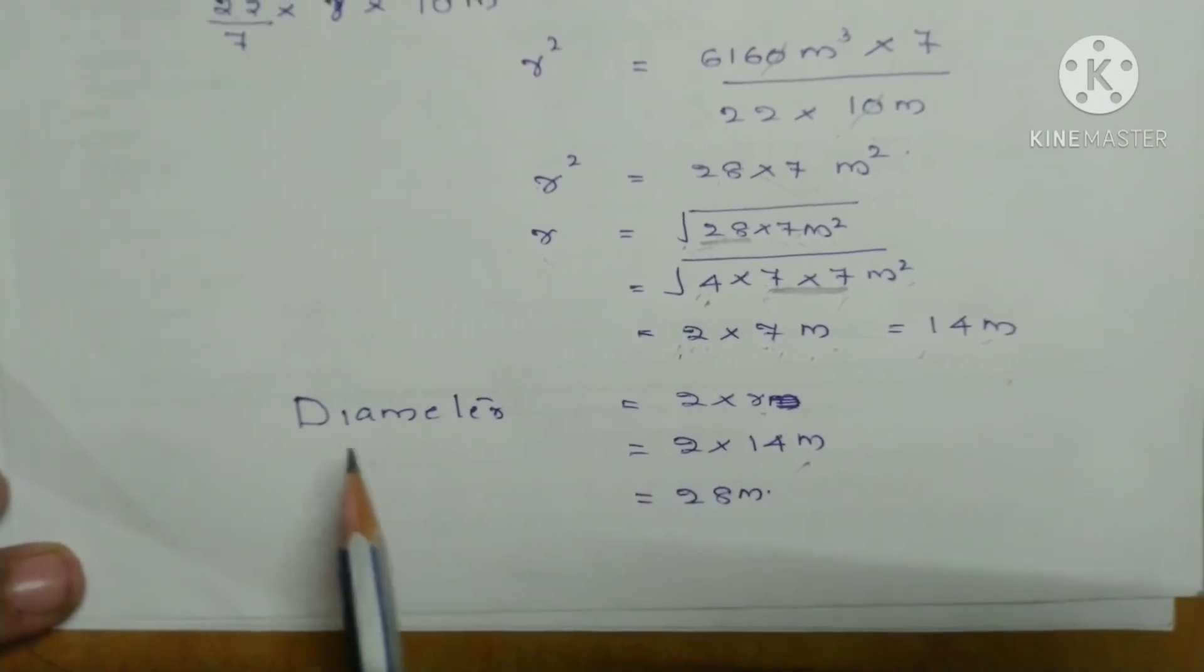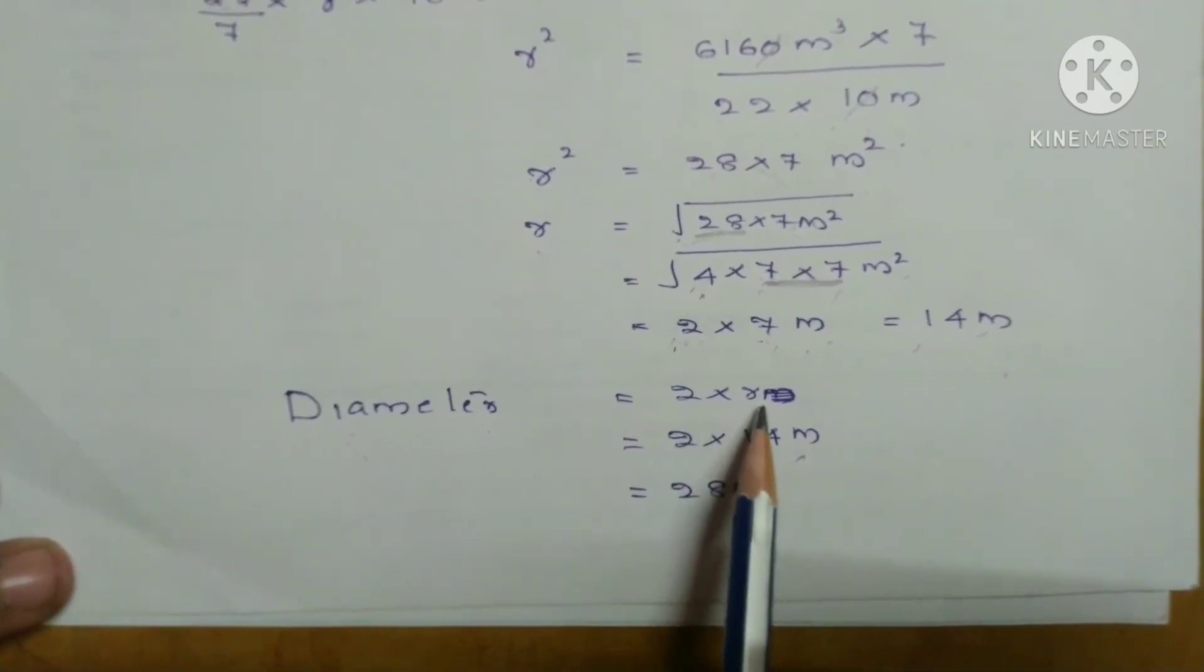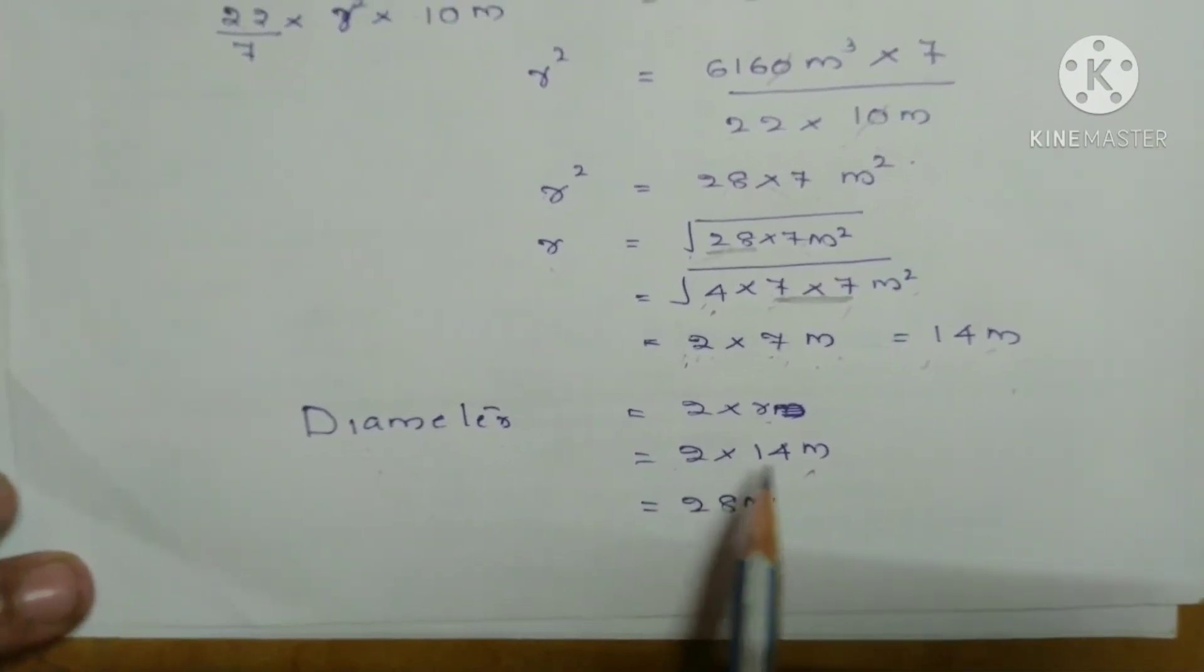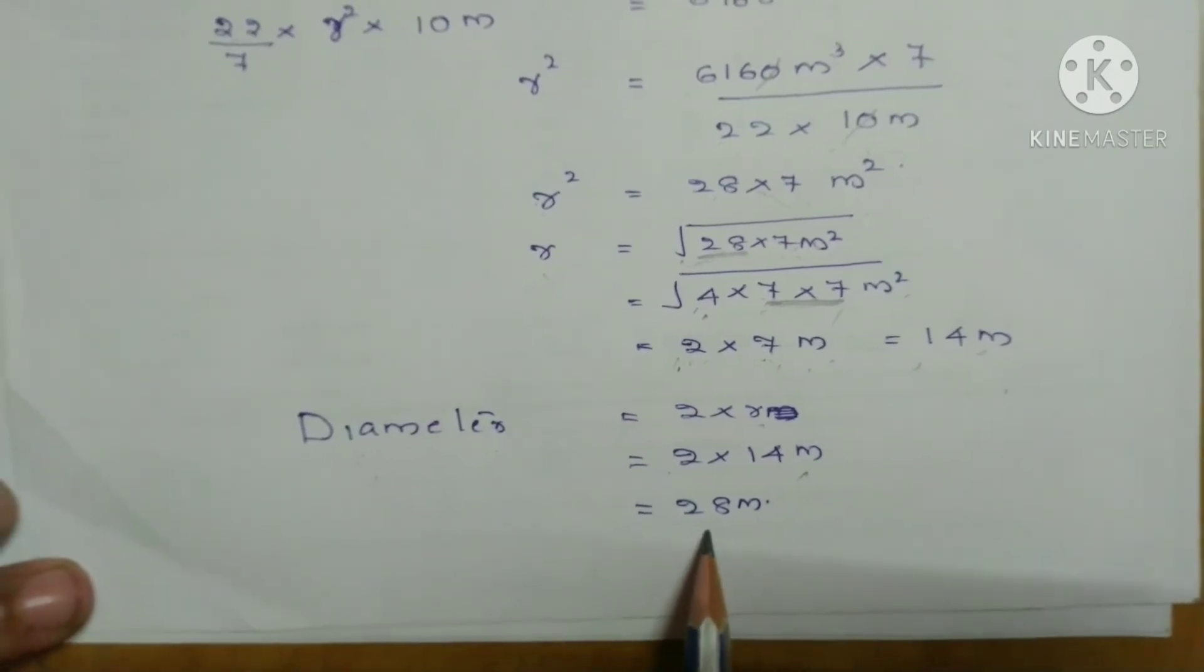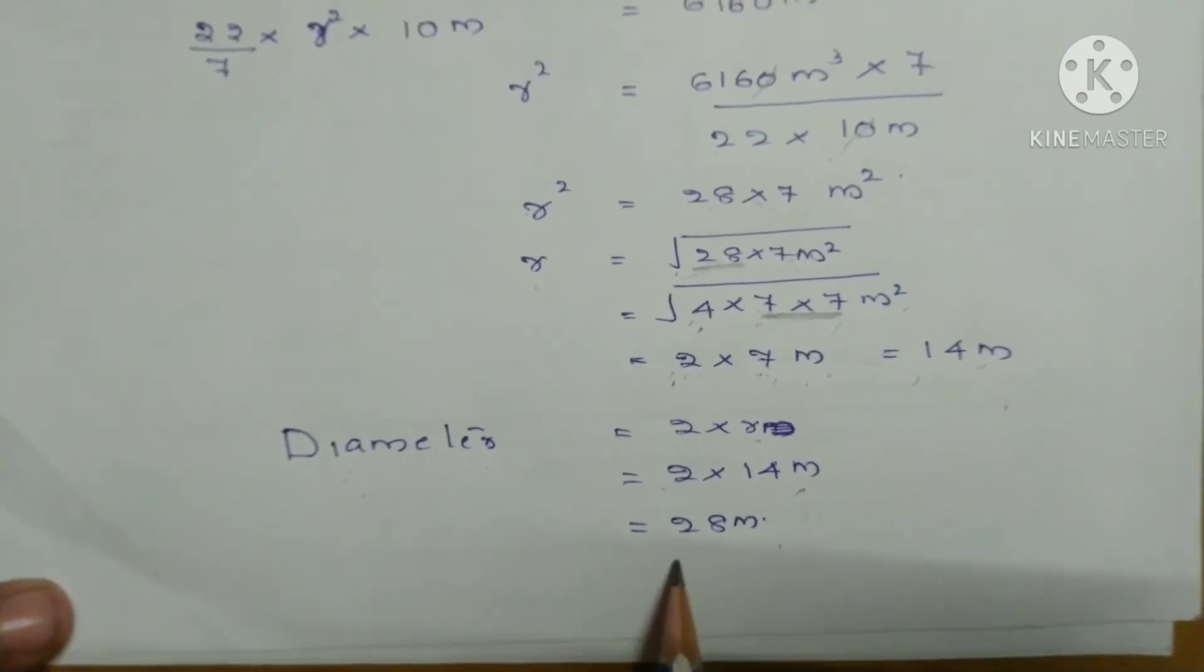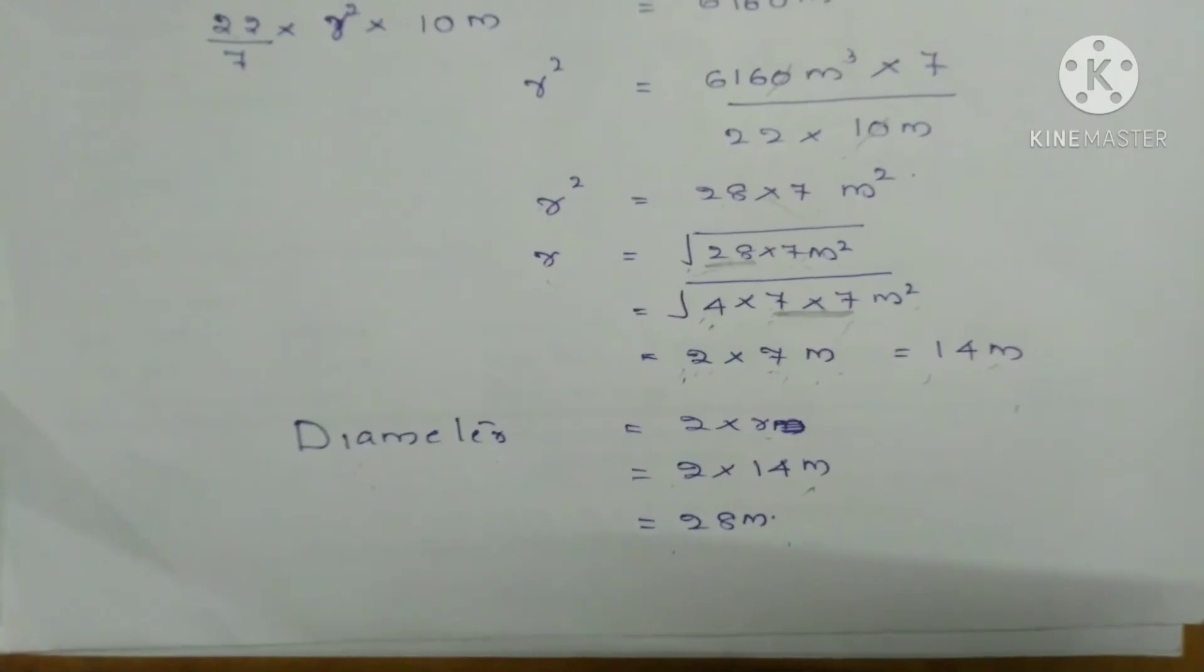So how can we find out diameter? Diameter is 2 times the radius, that is 2 into 14 meter. That is 28 meter. So final answer is 28 meter.